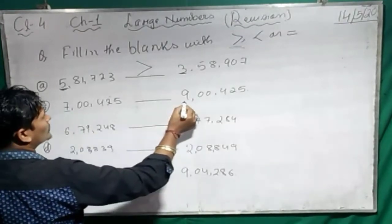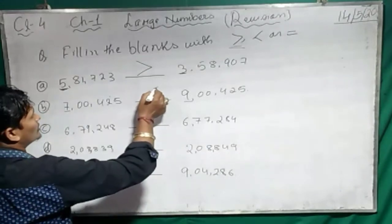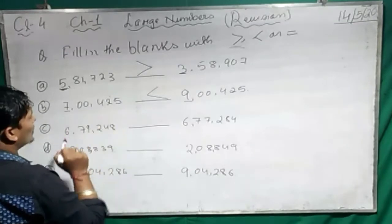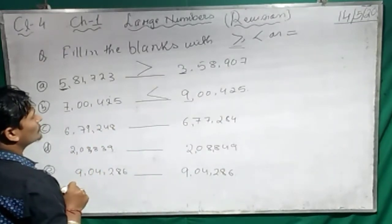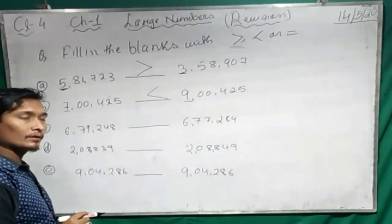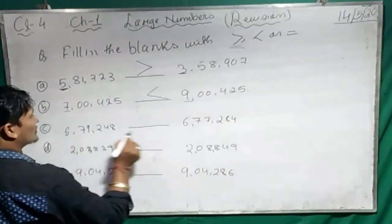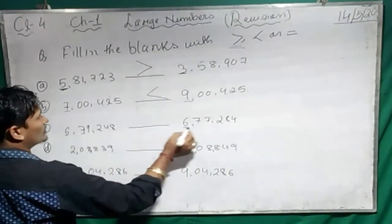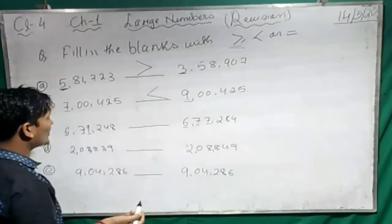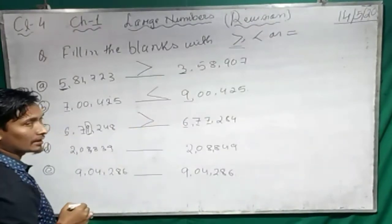This is 7 and this is 9 — which one is bigger? Obviously 9 is bigger. So we read: 7,425 is smaller than 9,425. Next: comparing digit by digit — 6 and 6, 7 and 7, then 9 and 7. Which one is bigger? 9 is bigger. So the open mouth goes towards the bigger number.